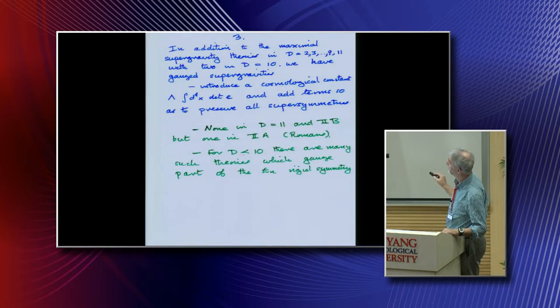It turns out you can introduce a cosmological constant, that's just determinant E, so you can add it to the four-dimensional theory and then you can add all the terms which preserve supersymmetry. If I do this in 11 it doesn't work and there's no such theory. If you do it in 2B there's no such theory, but in 2A there's just one possibility and that's called this Romans theory.